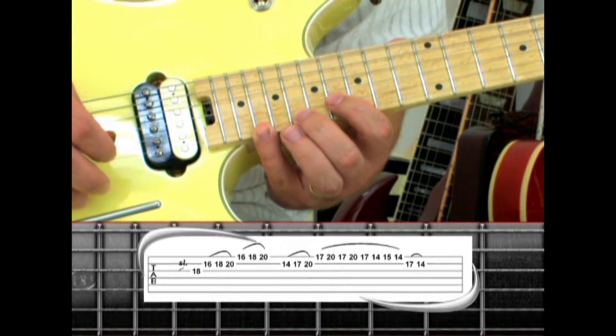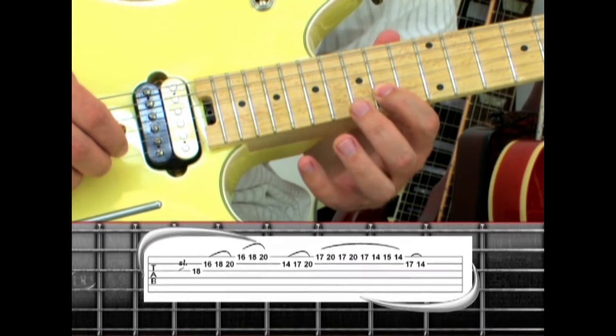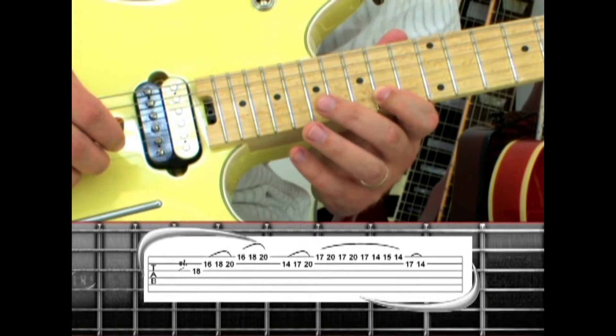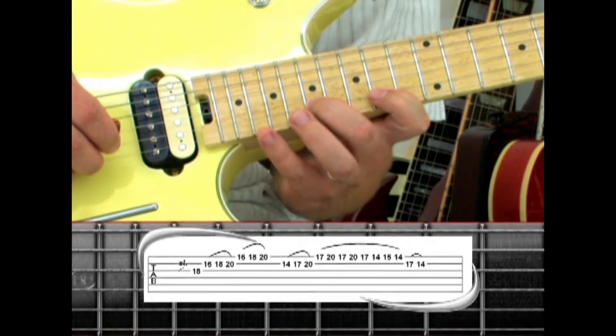Drop the index finger down to the second string 14, hammer the ring finger down to 17, and the pinky to 20.